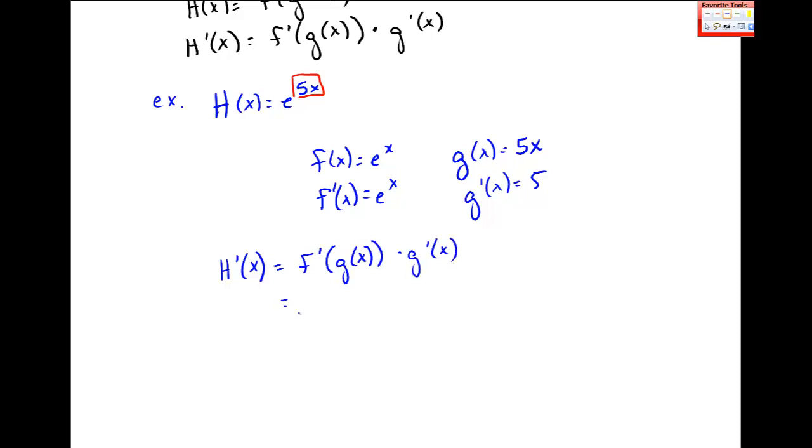So this is f prime of what's g of x? 5x times 5. And f prime is e to the x. So I put 5x into e to the x and multiply by 5. So I get 5e to the 5x.